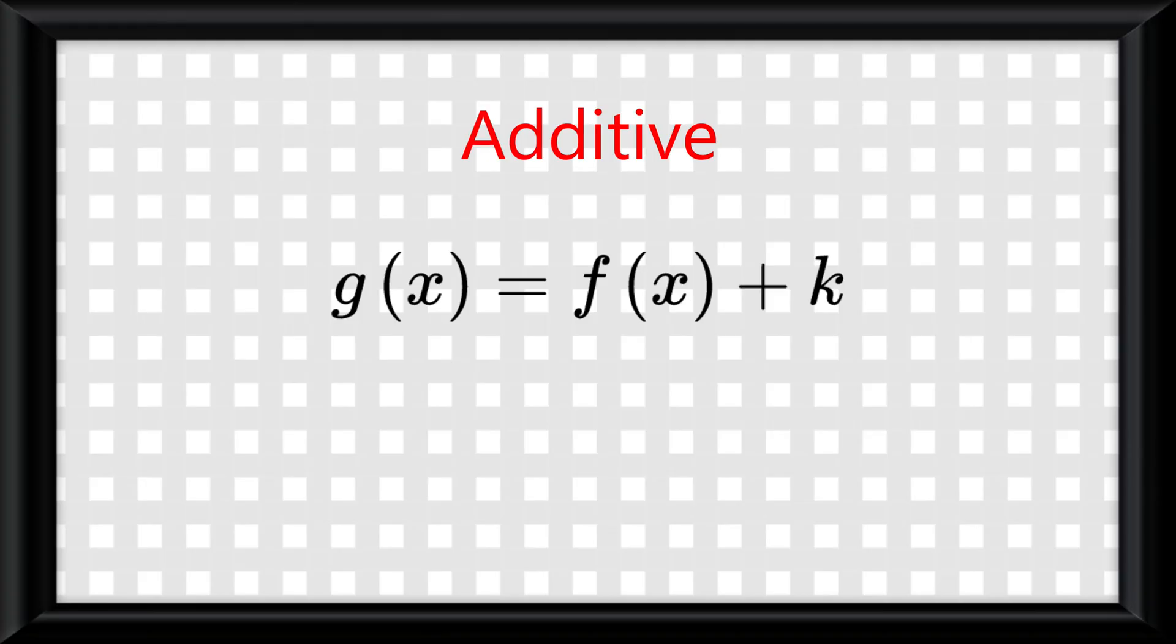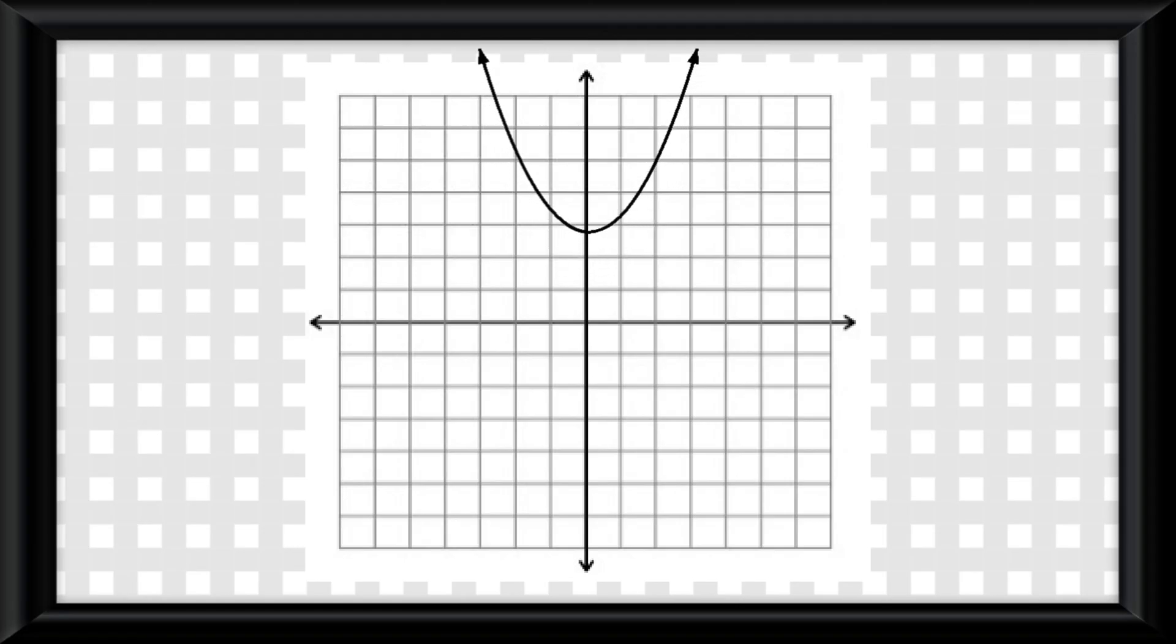Let's start with the additive transformations. G of x equals f of x plus k is known as a vertical translation, and it will move the graph either up or down.